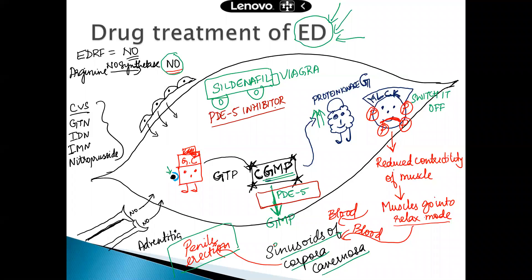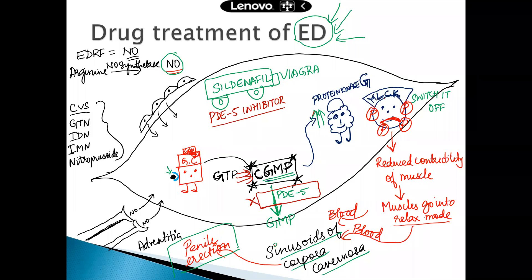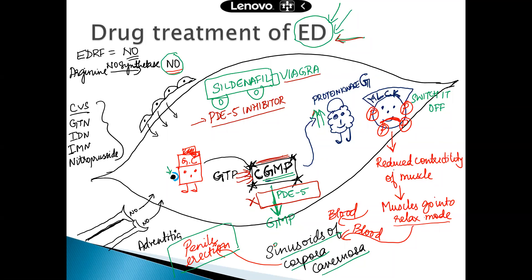When we take a drug called sildenafil, which is a phosphodiesterase 5 inhibitor, it stops the conversion of cyclic GMP to GMP. That means cyclic GMP levels will continue to rise, and cyclic GMP will initiate protein kinase G, which will switch off the myosin light chain kinase, so that the erectile dysfunction is corrected and the individual will have a continued or prolonged penile erection. That is how sildenafil, also termed Viagra, works — it is basically a PDE5 inhibitor that inhibits the conversion of cyclic GMP to GMP.